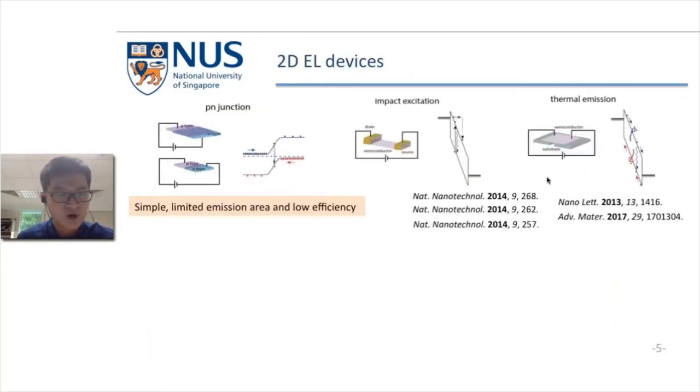Different approaches have been proposed to fabricate electrically triggered exciton devices. For example, a very simple device is the pin junction, such as a lateral pin junction by local gates. In this device, when forward bias is applied, there will be recombination of electrons and holes in the pin junction area, and there will be light emission.